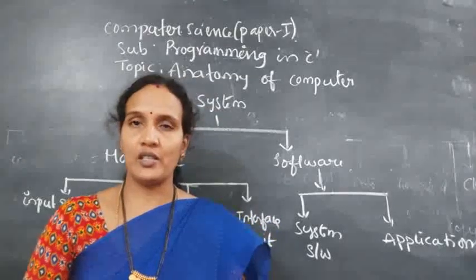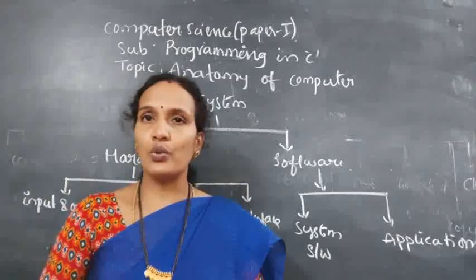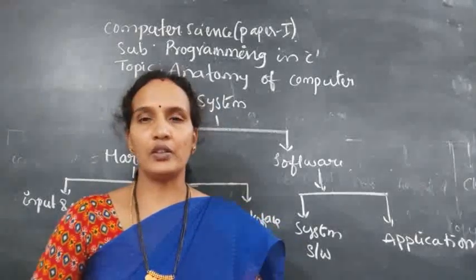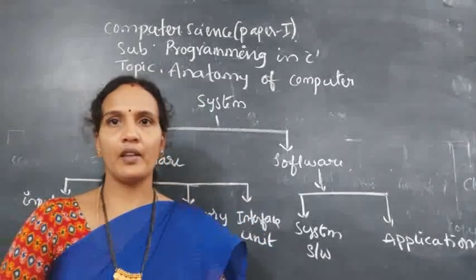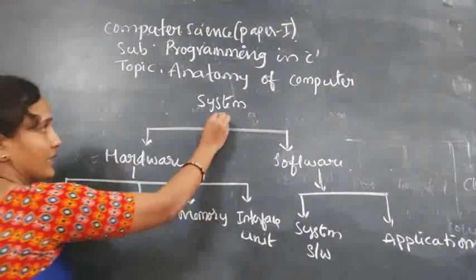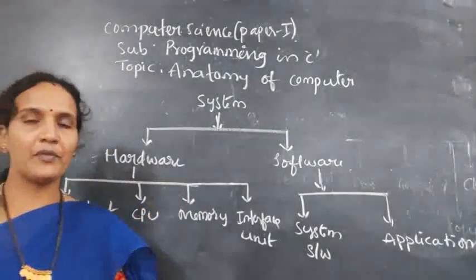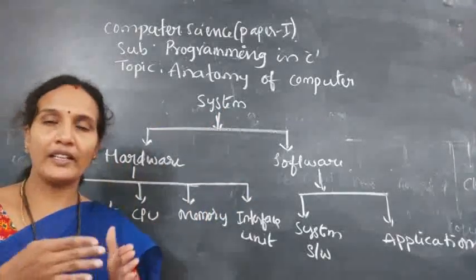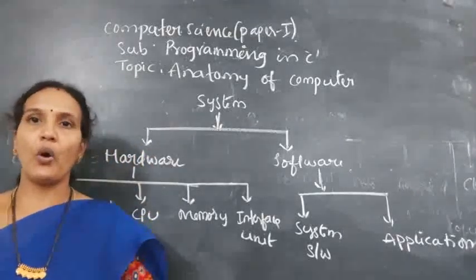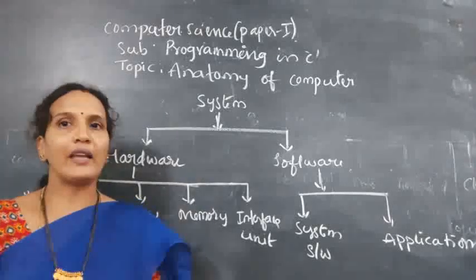To perform these calculations and to manipulate the data stored inside the system, there are two units in the system which are responsible for all these activities. Those two units are nothing but hardware and software. Together, these two units are called as the anatomy of the computer.